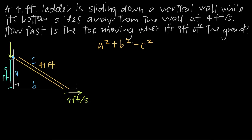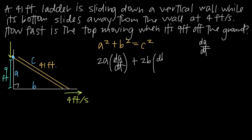We're interested in how fast the top of the ladder is moving — in other words, how fast a is changing. The rate at which a changes with respect to time is dA/dt. We get dA/dt by using implicit differentiation on the Pythagorean equation. Taking the derivative: the derivative of a² is 2a times dA/dt, plus the derivative of b² is 2b times dB/dt, equals the derivative of c² which is 2c times dC/dt.